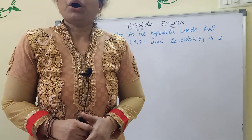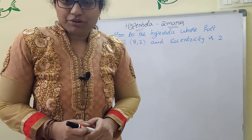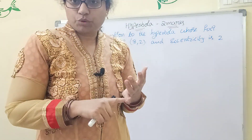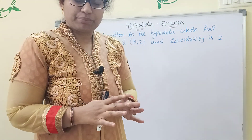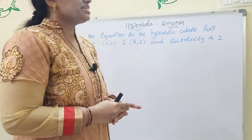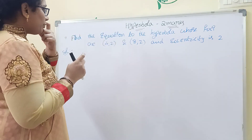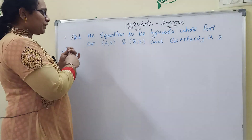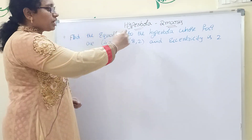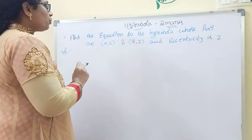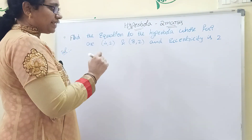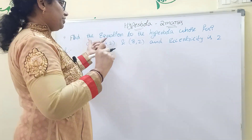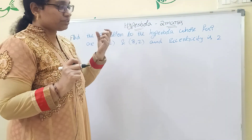Hi, dear students. Thank you very much for joining. Today's topic is hyperbola two-mark important questions. We already explained the four-mark hyperbola questions. Now I am discussing the two-mark important questions. The first question: find the equation of the hyperbola whose foci are (4, 2) and (8, 2), and eccentricity is 2.